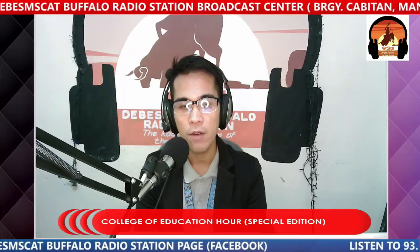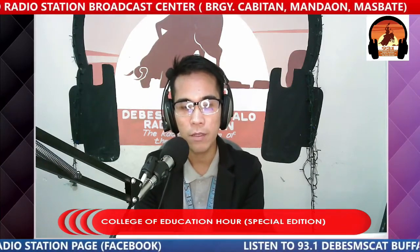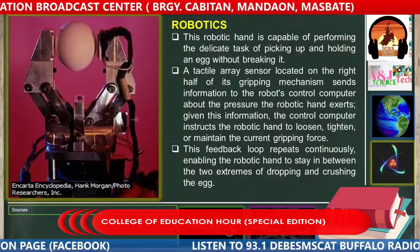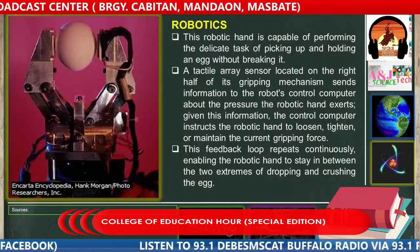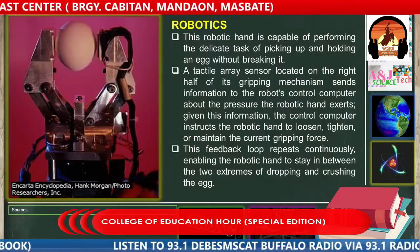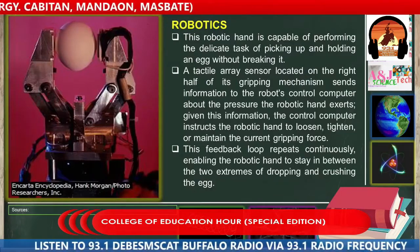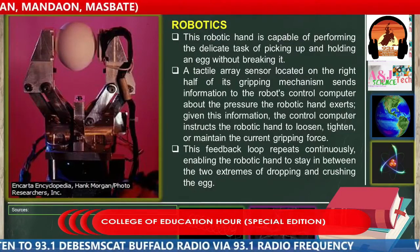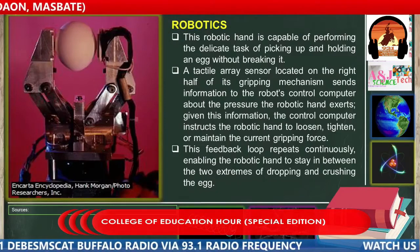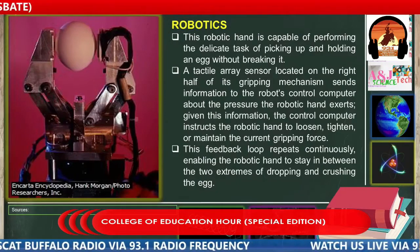Even in robotics at this time, there are parts that are still manually operated. The feedback loop repeats considerably, enabling the robotic hand to stay in between the two extremes of dropping and crushing the egg.